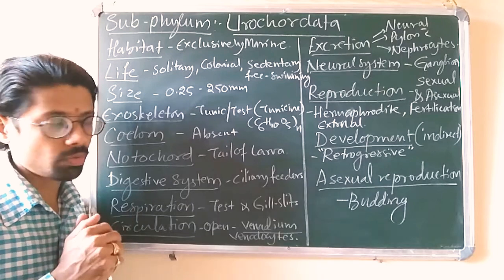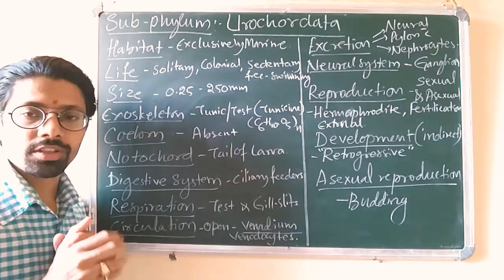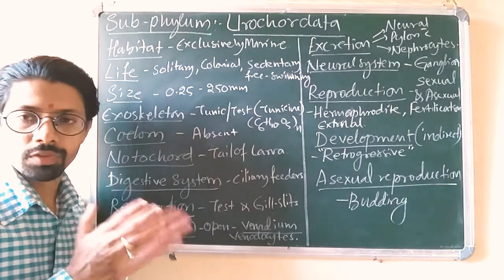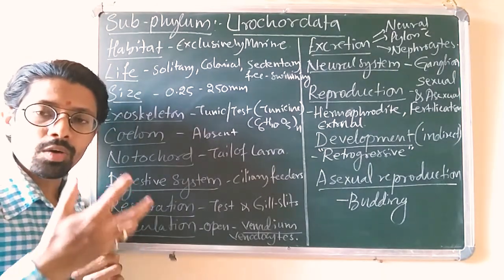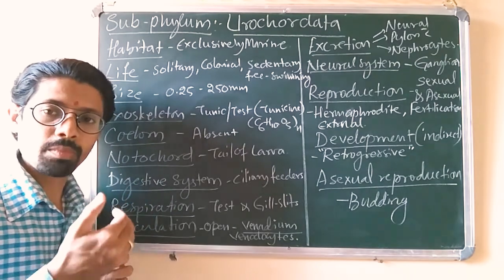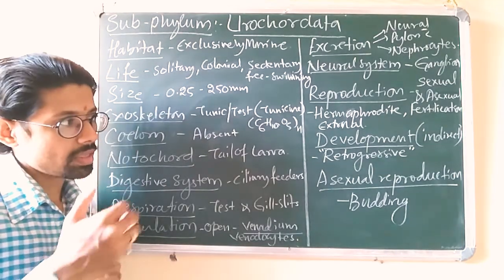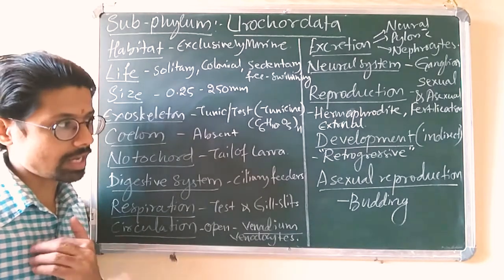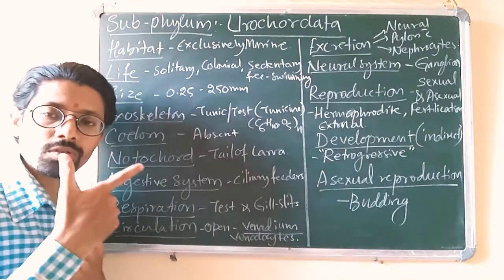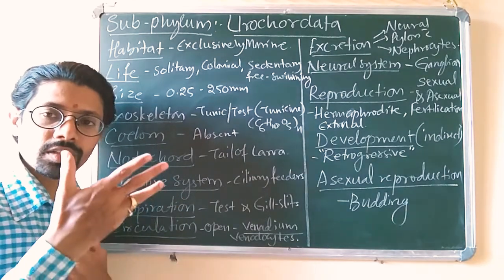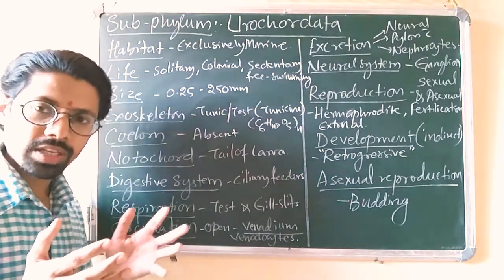Regarding reproduction, they have both sexual and asexual reproduction. For sexual reproduction, they are hermaphrodites — bisexual in nature. Fertilization is purely external and always cross-fertilization, meaning even though male and female reproductive organs are present in the same body, gametes are exchanged between different organisms. Development is always indirect — they have a larva, and the larva shows all five basic characters of chordates: dorsal tubular nerve cord, notochord, pharyngeal gill slits, heart, and tail.